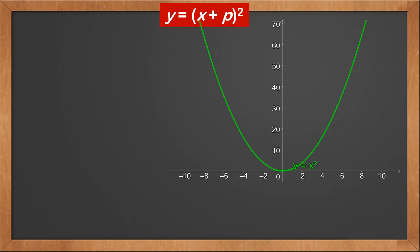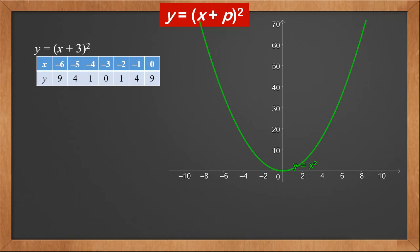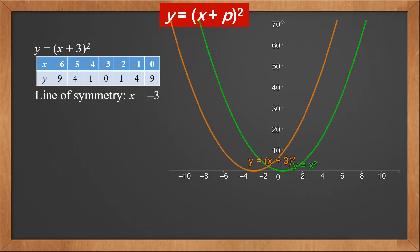Now let's see how we can move y equals x squared to make y equals (x plus p) squared. Let's look at y equals (x plus 3) squared. This is a complete square and minus 3 makes it 0. Therefore, we find values around minus 3. x values are minus 6, minus 5, minus 4, minus 3, minus 2, minus 1, 0. y values are 9, 4, 1, 0, 1, 4, 9. We can see that it's y equals x squared moved left along the x axis by 3. The line of symmetry becomes x equals minus 3, and the vertex is (minus 3, 0).